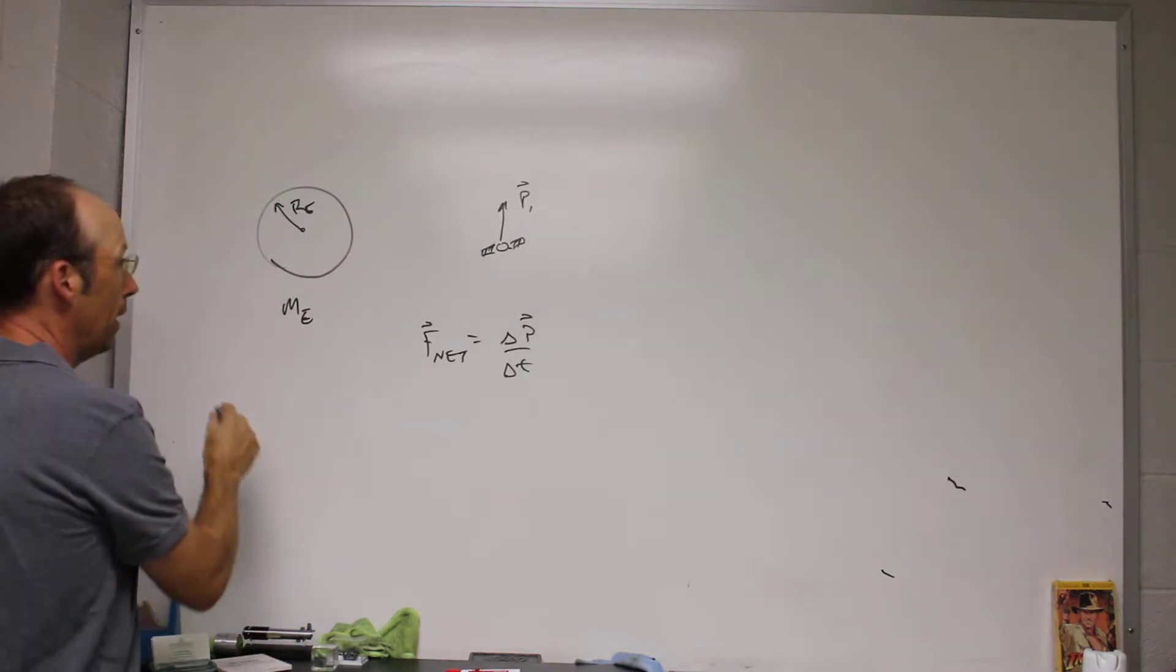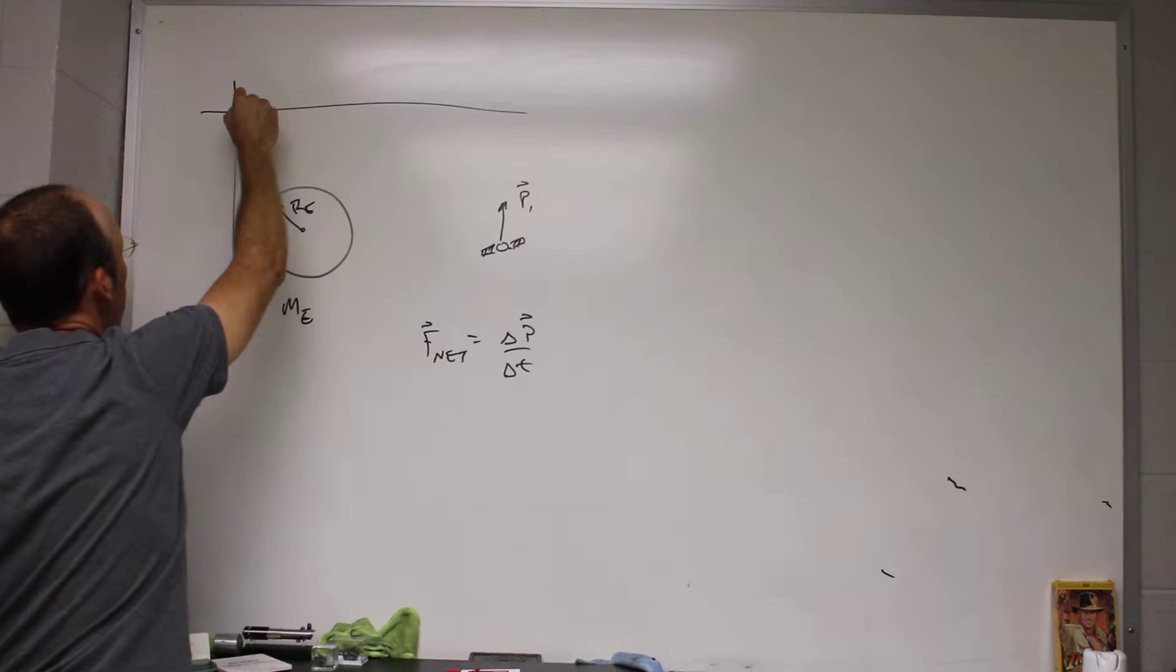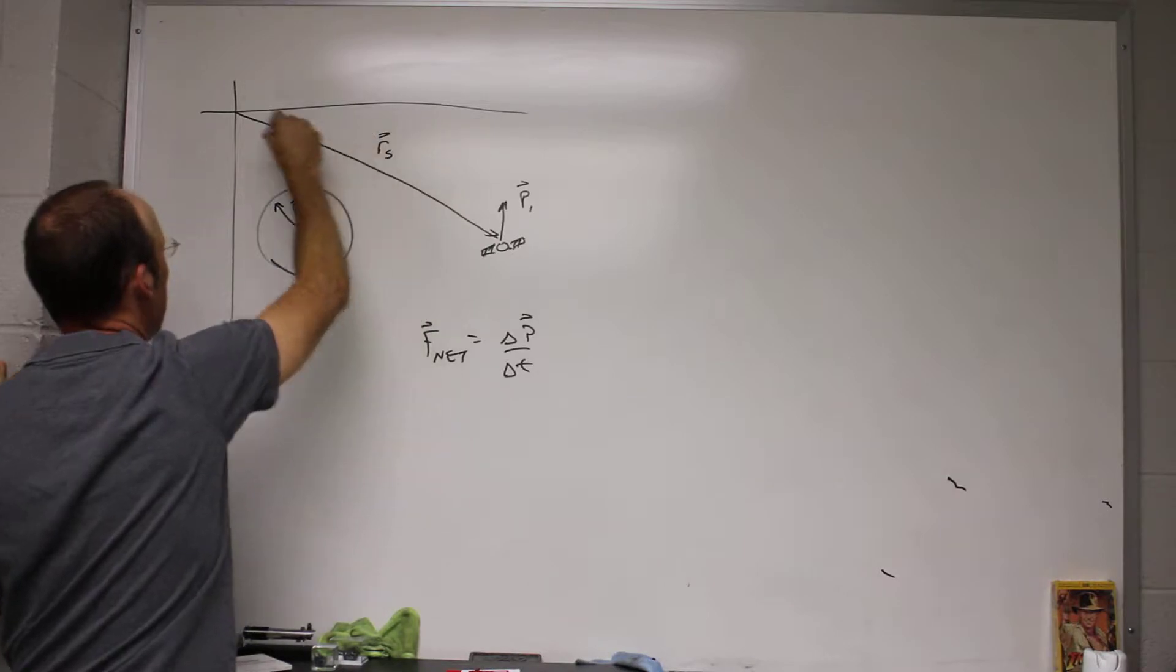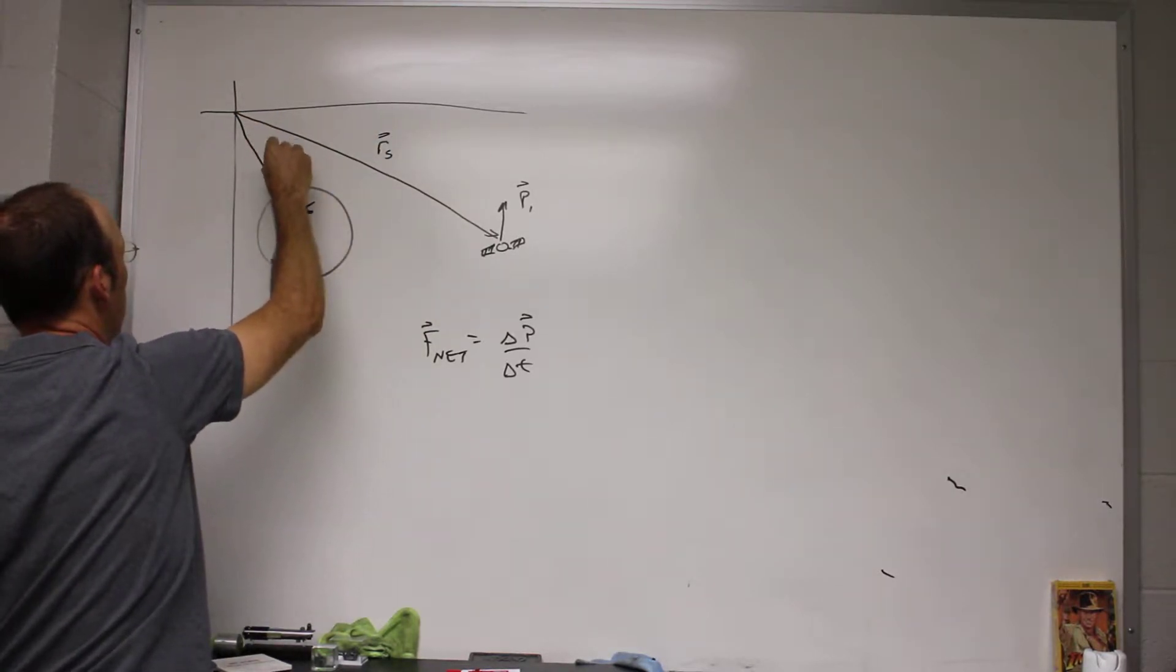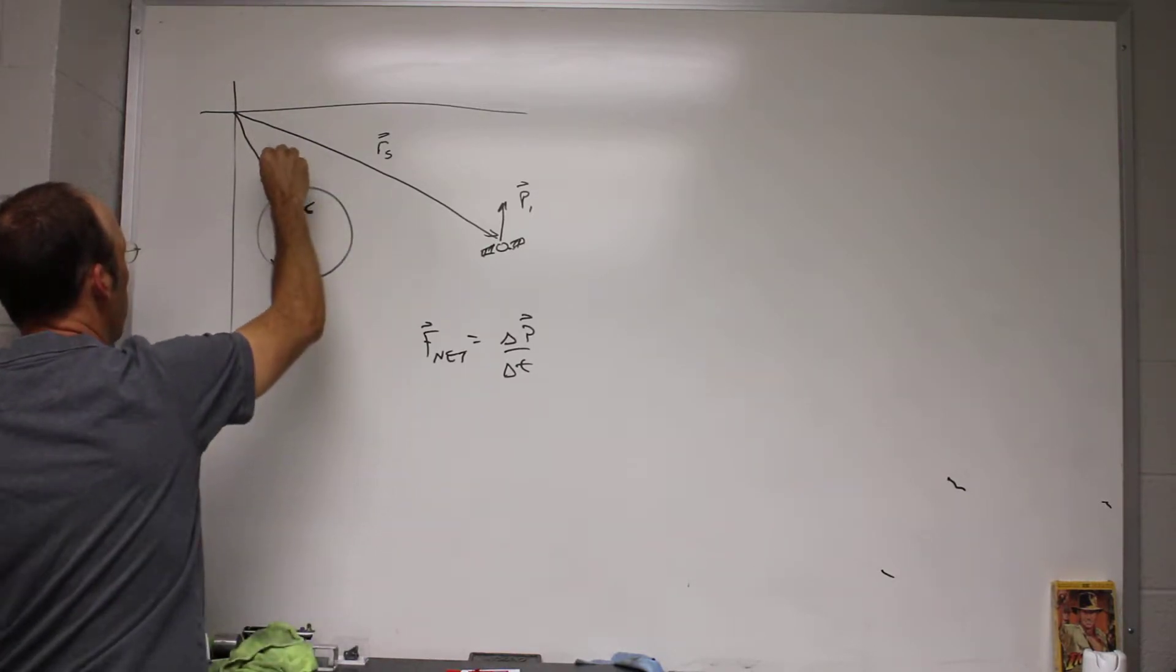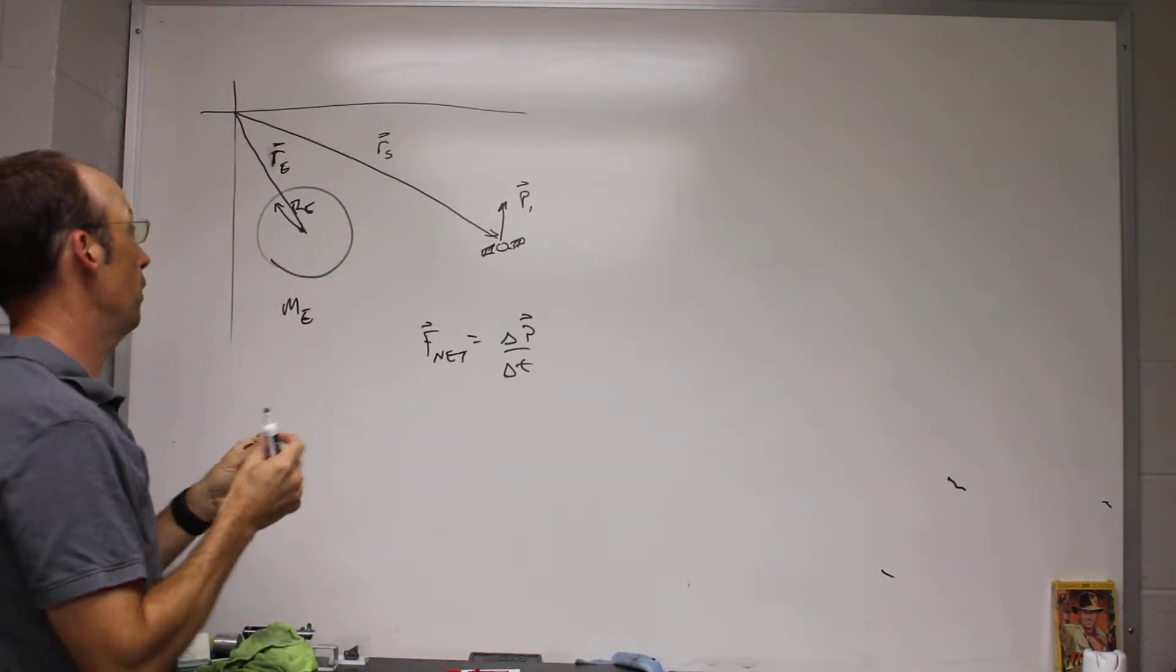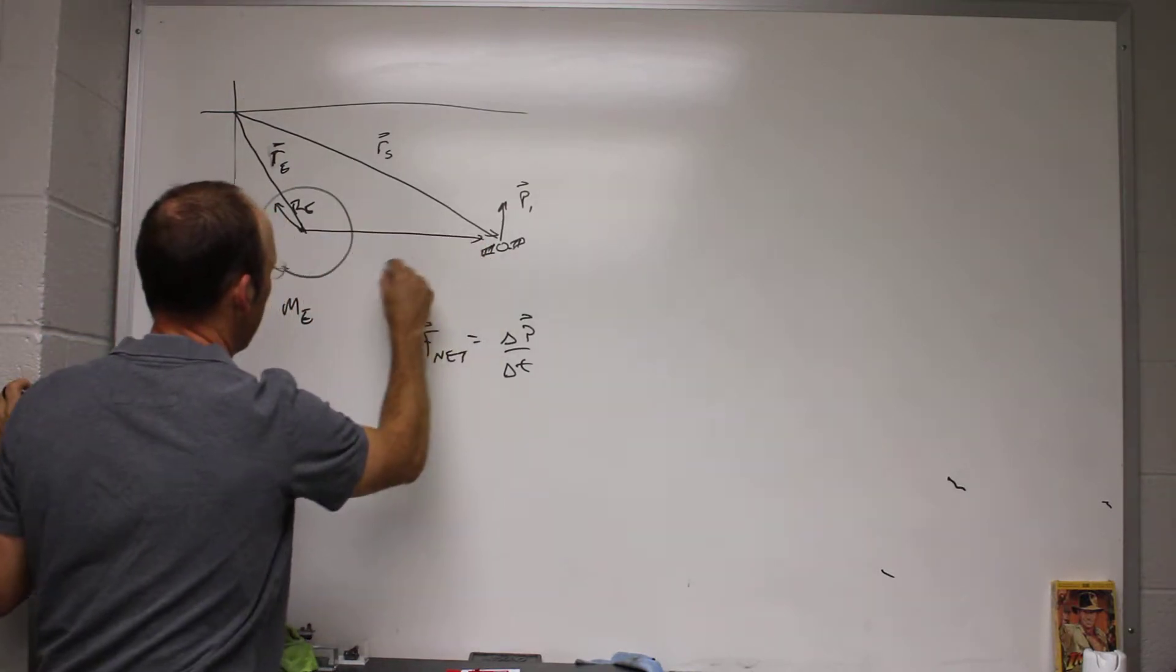So let's make this as complicated as possible. I actually put it up here. Here's my origin. So here I have this vector, RS for the satellite, and then I have this vector, R, let's call it a little R. I need to find the gravitational force that depends on this vector, the vector from the center of the Earth to the satellite. That's R.